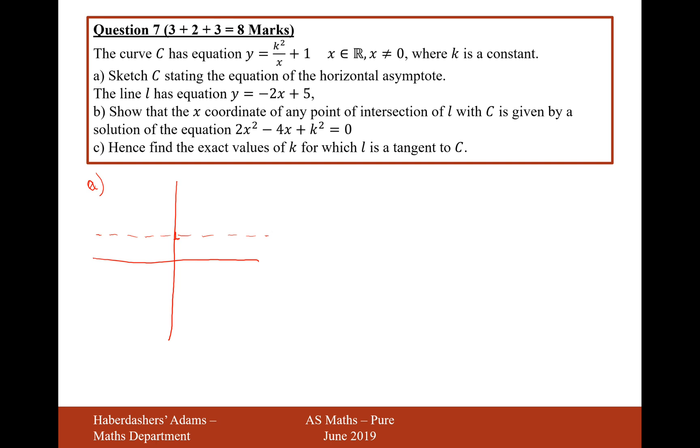So the equation of that asymptote is y equals 1 and it's going to look like the 1 over x squared graph, just like that. Excellent.